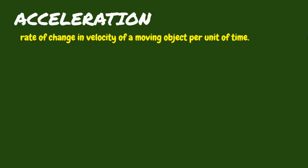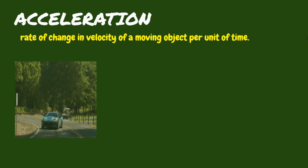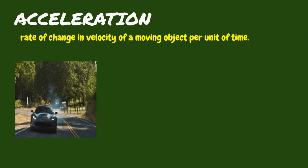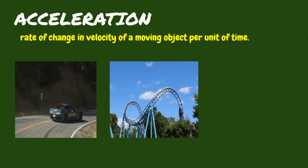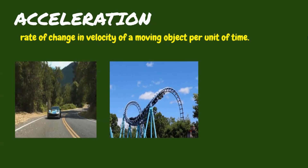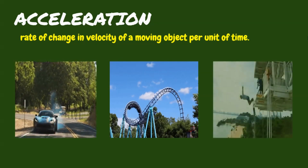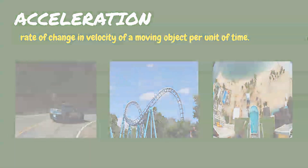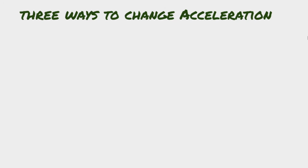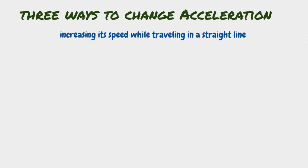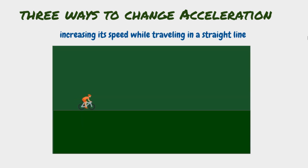Here are some other examples showing acceleration. There are three factors or ways to change the acceleration. First, by increasing its speed while traveling in a straight line. For example, this bike accelerates because it suddenly increased its speed.